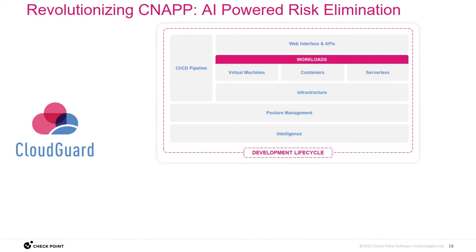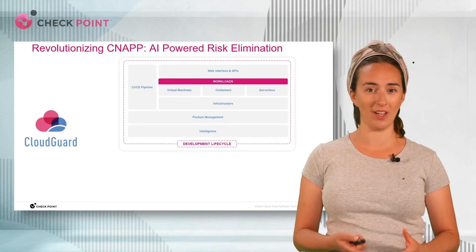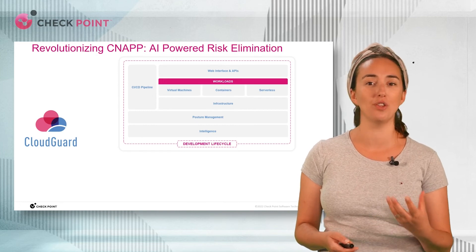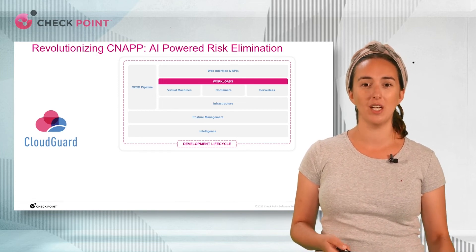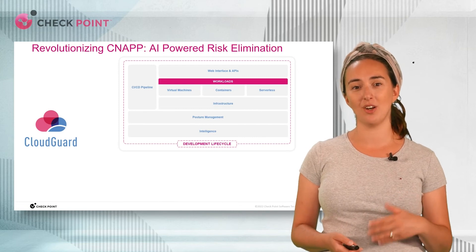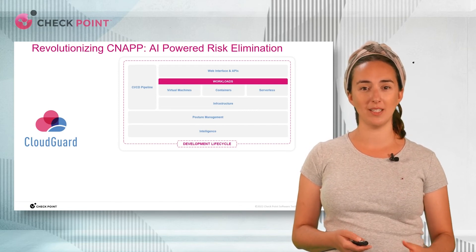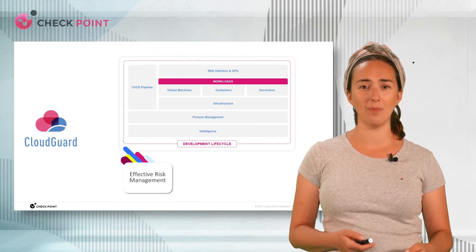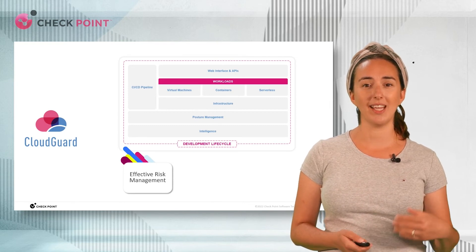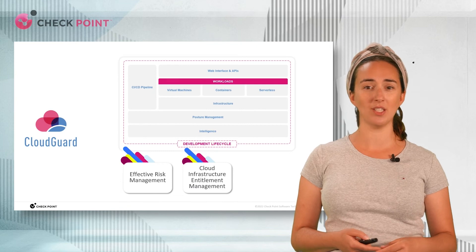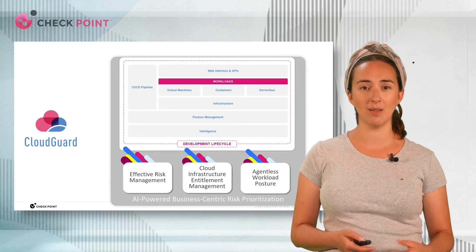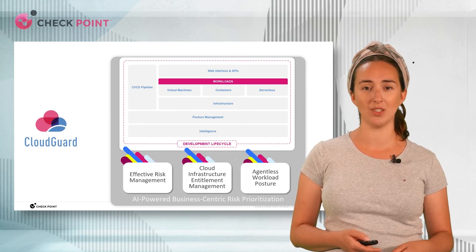What I want to call your attention to today is how we've augmented our CNAP offering so that it really stands out from any other offering in the market. I can count on one hand how many security vendors can confidently say they have even two-thirds of the breadth of Checkpoint CloudGuard's coverage. What really makes CloudGuard stand out in 2022 are the new capabilities we've added on top of our CNAP platform: effective risk management providing AI-powered remediation prioritization, a key component to ensure entitlement management is no longer a black box, and agentless workload protection options for security teams who want to avoid deploying agents directly on their workloads.